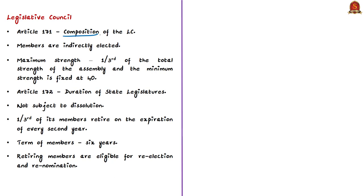The composition of the legislative council is dealt with under Article 171. The members of the legislative council are indirectly elected. The maximum strength of the council is fixed at one-third of the total strength of the assembly, and the minimum strength is fixed at 40. This is done to ensure the predominance of the state legislative assembly, which is the directly elected house, in the legislative affairs of the state.